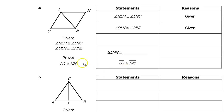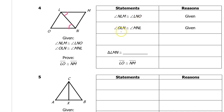Let's do the same thing for problem number four. Notice that we are not being asked to prove that the triangles are congruent — we are asked to prove that corresponding parts LO and NM are congruent. But in order to prove those corresponding parts are congruent, first we will prove the triangles congruent as usual. We are given that angle NLM is congruent to angle LNO, and that angle OLN is congruent to angle MNL. That's the given.